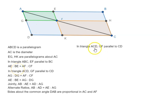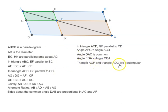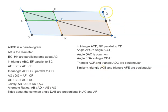In triangle ACD, angle AFG is equal to angle ACD because these two are parallel lines and these are alternate angles. Angle DAC is common to both the triangles — it is common to both ACD and AFG. That means the third angle is also equal, since all three corresponding angles are equal. That means triangle AGF and triangle ADC are equiangular. Similarly, we can prove that triangle ACB and triangle AFE are equiangular.